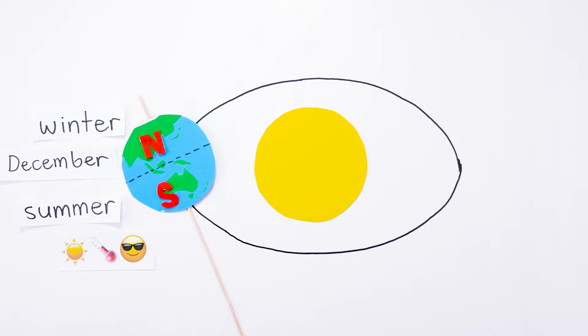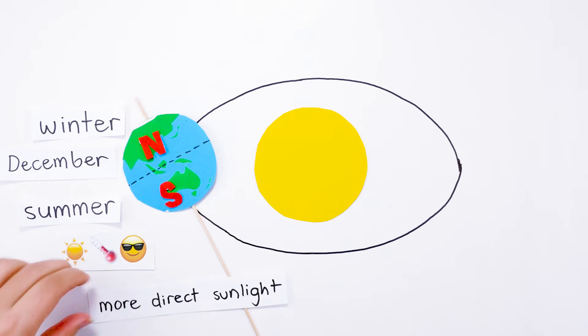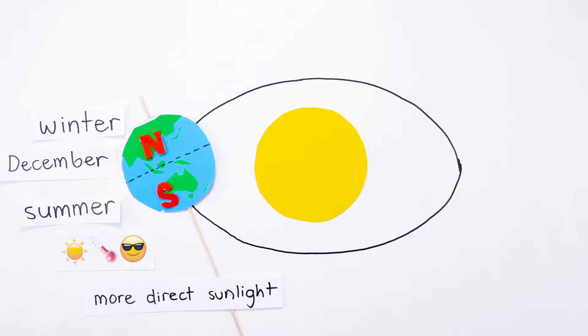It's hotter in summer because the tilt means that the sunlight hitting that part of the Earth is more direct. Also the days are longer with more hours of daylight to warm up. The pole tilted towards the Sun is in constant daylight.